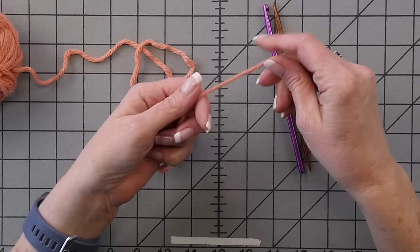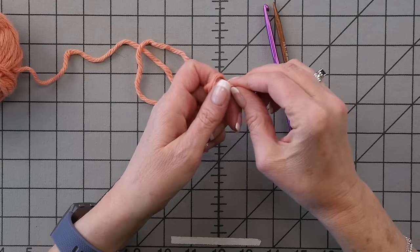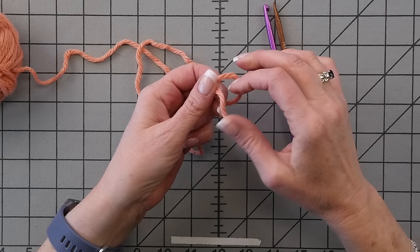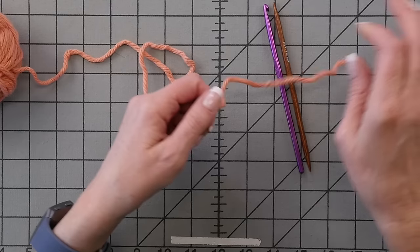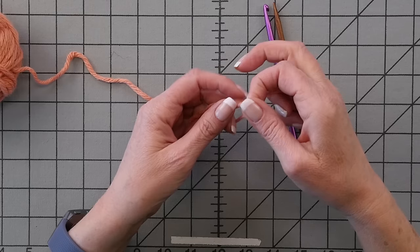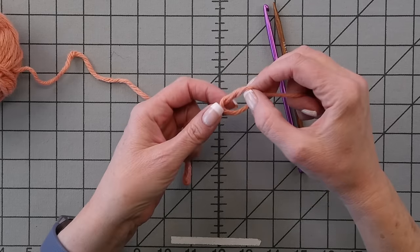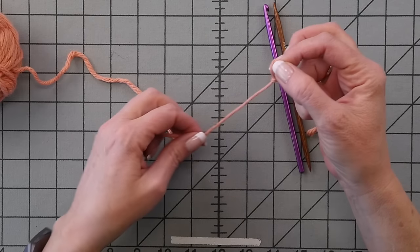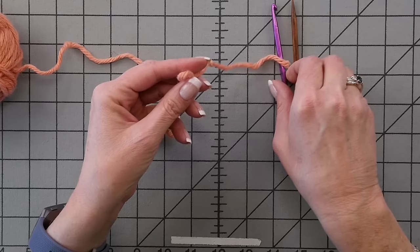I'm gonna tie a knot in the end of my yarn because it will become important later to be able to distinguish the slipknot end from the other end. And that knot will remind us where the slipknot is. So I'm making a slipknot.